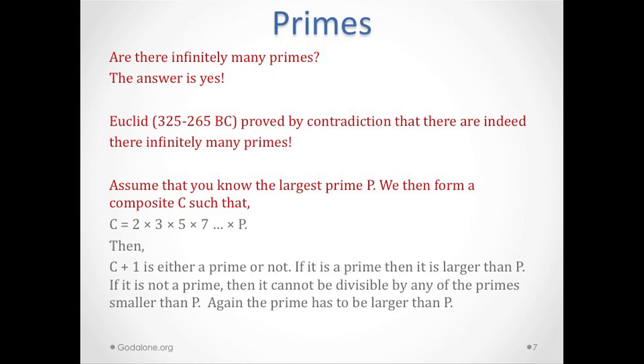Now the next question is, are there infinitely many primes? These are questions mathematicians usually ask. Can you prove that? This proof was actually done, look at the date there, 325 to 265 BC. So you're talking about 2300-2400 years ago. This was due to Euclid and proved by contradiction that there are indeed infinitely many primes.